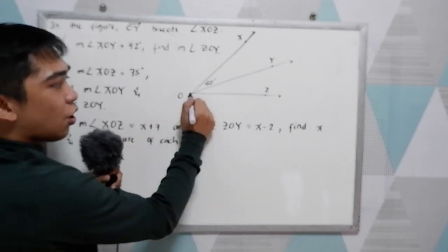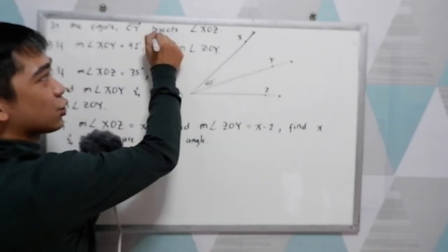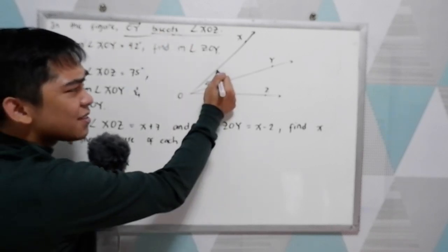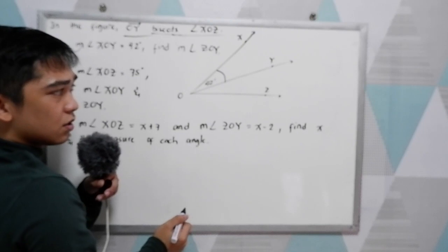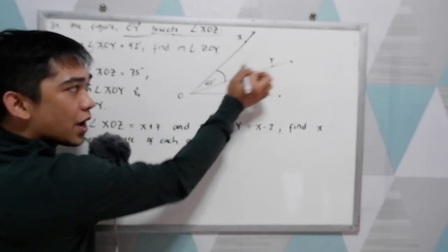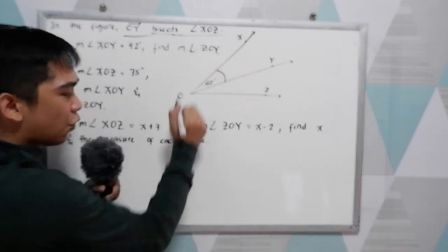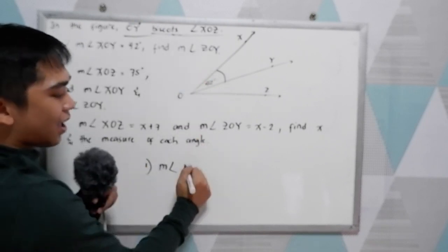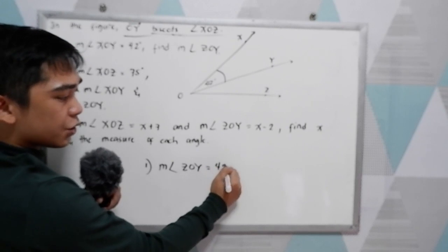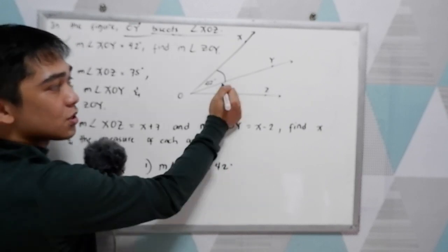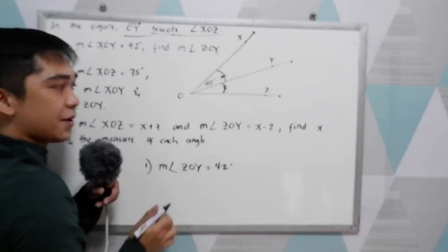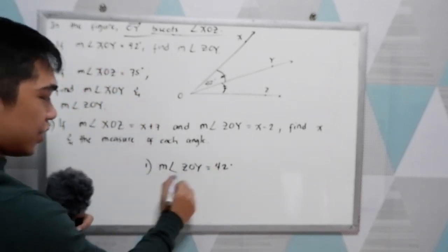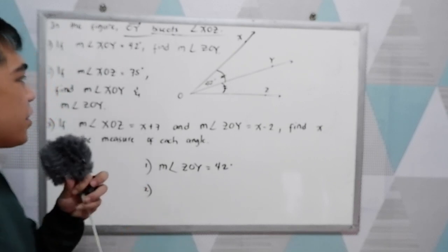In our condition, OY is our angle bisector, so that means it divides this angle into two equal parts. So if angle XOY is 42 degrees, therefore measure angle ZOY is also 42 degrees because they are equal or congruent.